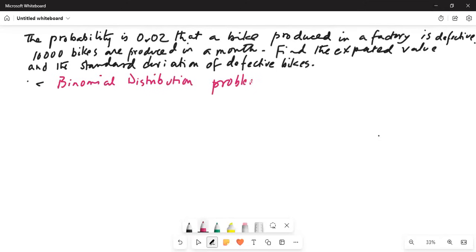Because two possible results, two outcomes. One is defective and two is not defective.